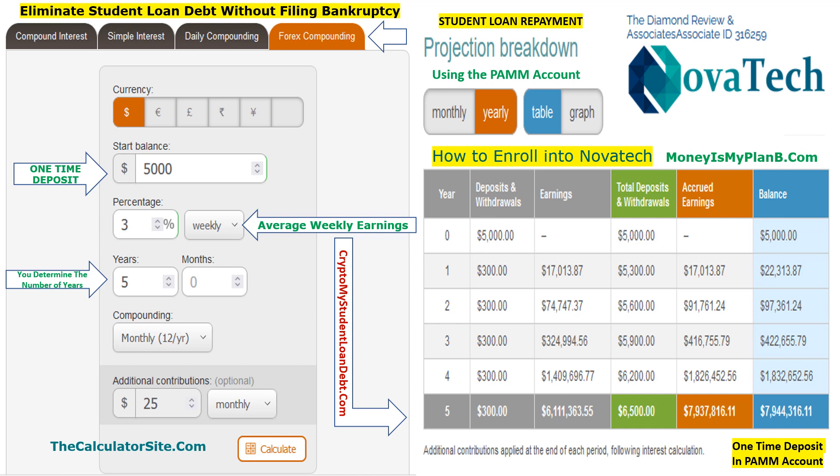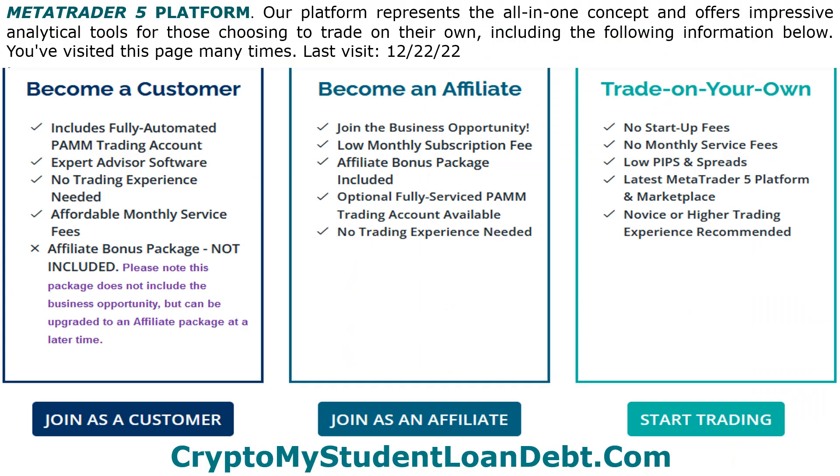Go to the calculator site and do your own projecting. There are about three hundred fifty to sixty different forms of calculators on that site. Another calculator you may want to use is the loan calculator — it will show you how much and how long it's going to take to pay off your student loan at whatever interest rate your loan carries. That will give you an idea of the interest you're going to pay, and you can eliminate all that by using the PAM account.